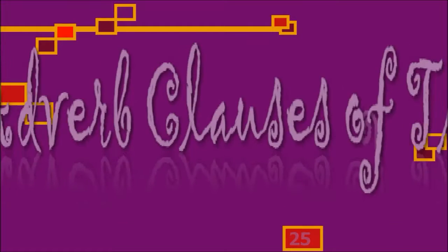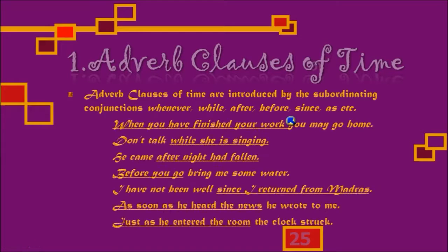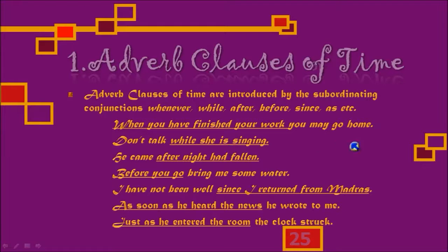The first one is adverbial clauses of time. Adverb clauses of time are introduced by the subordinating conjunctions: when, whenever, while, after, before, since, as, etc. For example: 'When you have finished your work, you may go home' — this subordinate clause indicates time. Another example: 'Don't talk while she's singing' — this mentions the time when not to talk. You may pause the video to check all the examples.